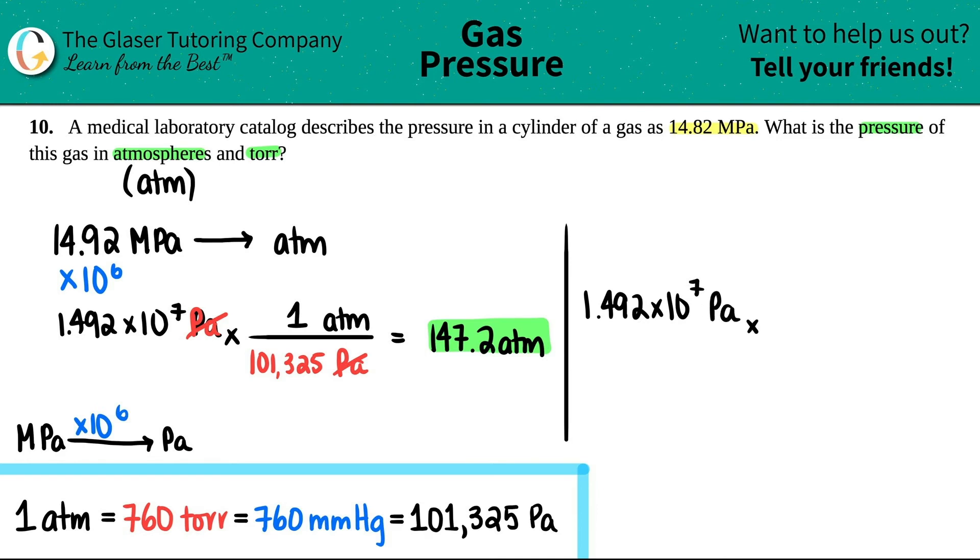Times by the ratio we don't want pascal anymore so we put it on the bottom and now we want torr so torr goes up on the top. Go back to our conversion factors and take the two that you care about now I only care about torr and pascal so 760 torr equals 101,325 pascals so 760 goes with the torr value and then the 101,325 pascals go on the bottom. Pascal cancels out and now you're left with the answer.